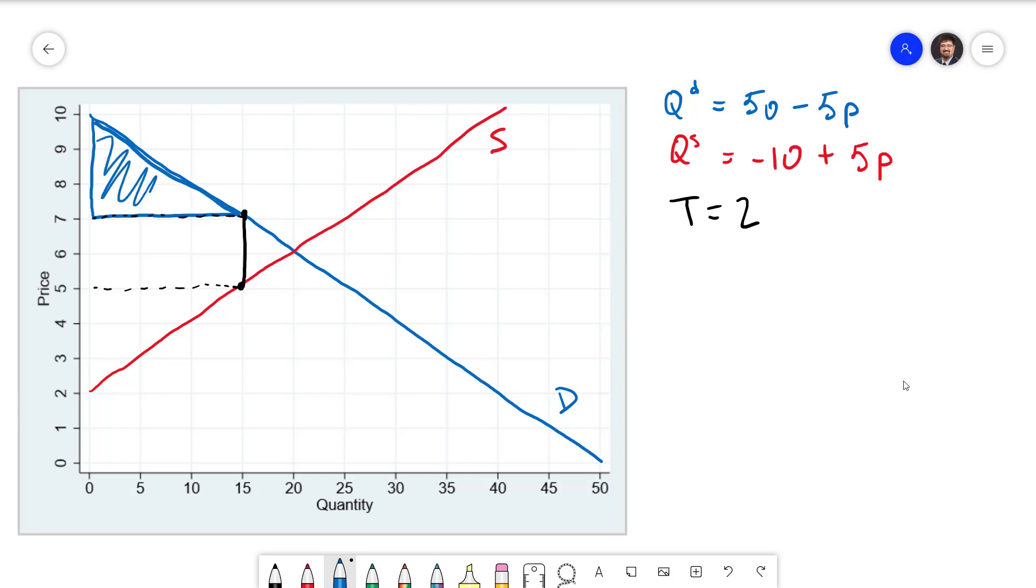I'm going to shade that in. To calculate that we have a base of 15 as opposed to the 20 we had without the tax, and a height of 10 minus 7 which is 3. Divide that by 2. We end up with 22.5.